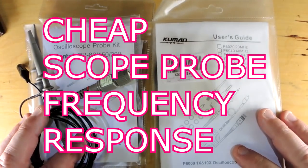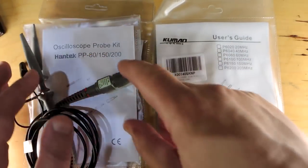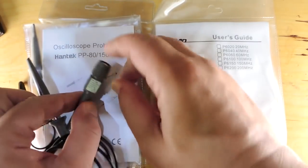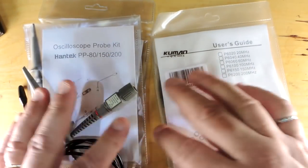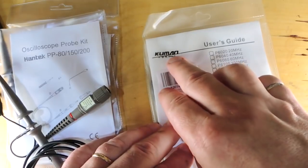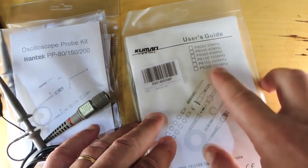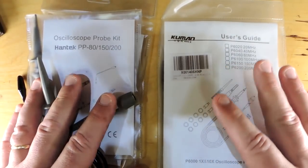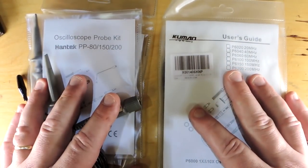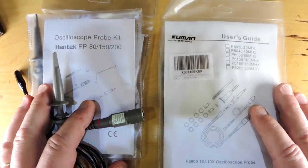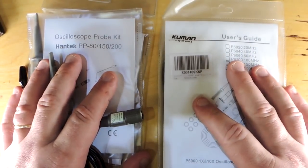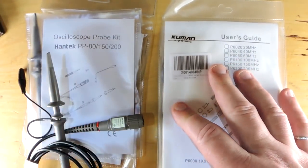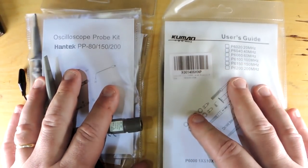Here's a couple of cheap scope probes I picked off the internet. This one's the Hantek PP150 with 150 megahertz bandwidth, and this is the Cuman P6100 which is a 100 megahertz probe. I'm going to use my signal generator and spectrum analyzer to see what the bandwidth response of these probes are, and then I'll probably test all sorts of old scope probes I have hanging around to see how they operate.